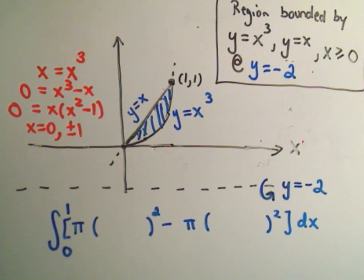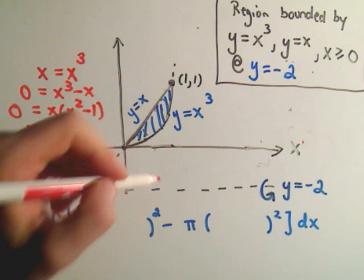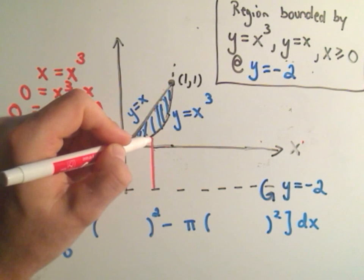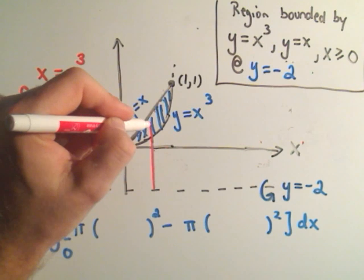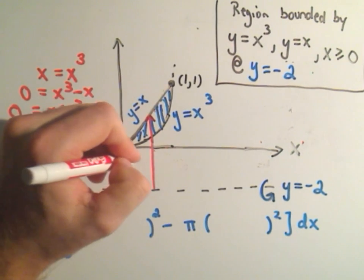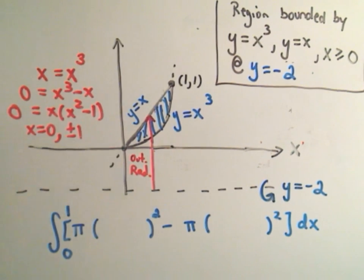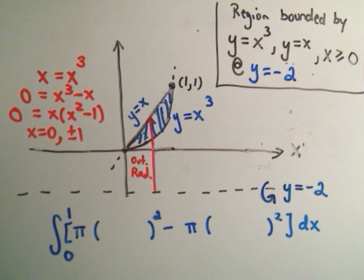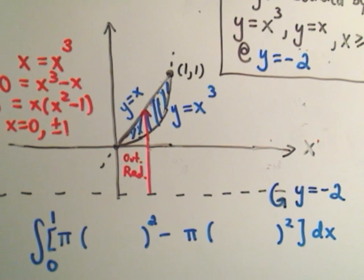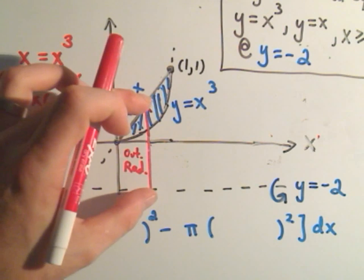So the same way as in the last part, whatever line I'm rotating about, I draw a line perpendicular to that. It's just hitting the region, and I draw it until it just stops hitting the region. And that's going to be my outer radius. So the outer radius is what this little line represents. So here's the outer radius.